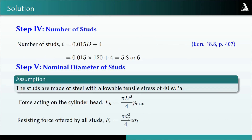In step 4 we determine the number of studs required to fix the cylinder head. The number of studs n = 0.015D + 4 (equation 18.8, page 407). Substituting D = 120 mm gives n = 5.8; since n must be an integer, we take n = 6.